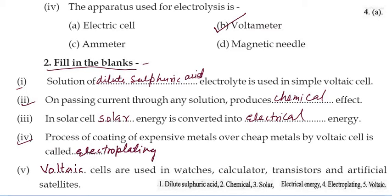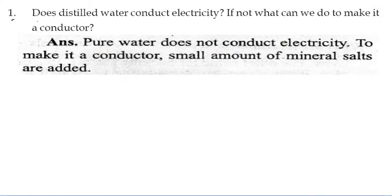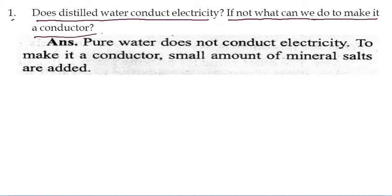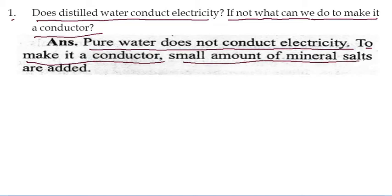Voltaic cells are used in watches, calculators, transistors, and artificial satellites. First short answer question: does distilled water conduct electricity? If not, what can we do to make it a conductor? Pure water does not conduct electricity. To make it a conductor, a small amount of mineral salt or acid such as dilute sulfuric acid can be added.